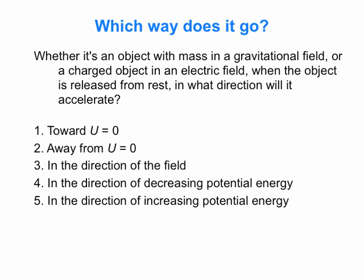When released from rest, in what direction will the object accelerate? The possible answers are: toward u equals zero; away from u equals zero; in the direction of the field; in the direction of decreasing potential energy; or in the direction of increasing potential energy. Some of these may fit in some cases but not others — what is the best answer that fits every scenario?